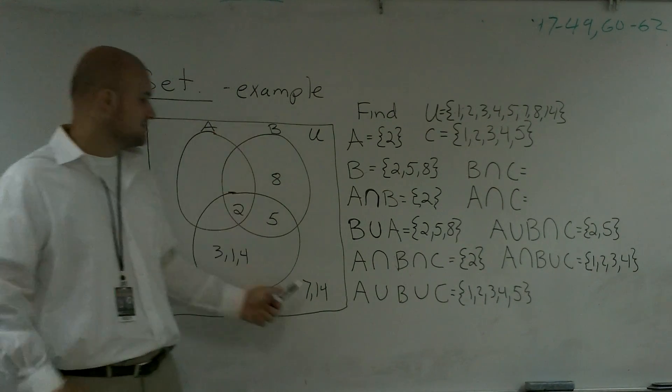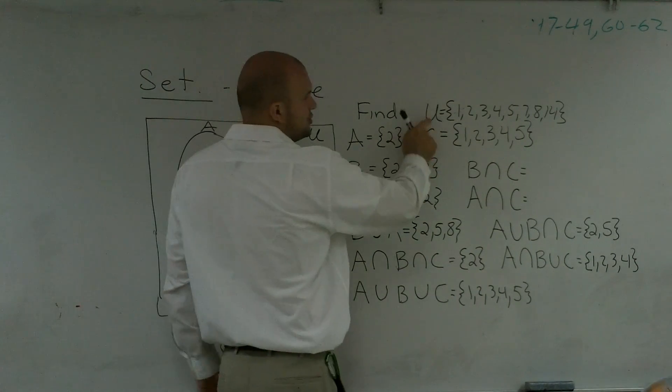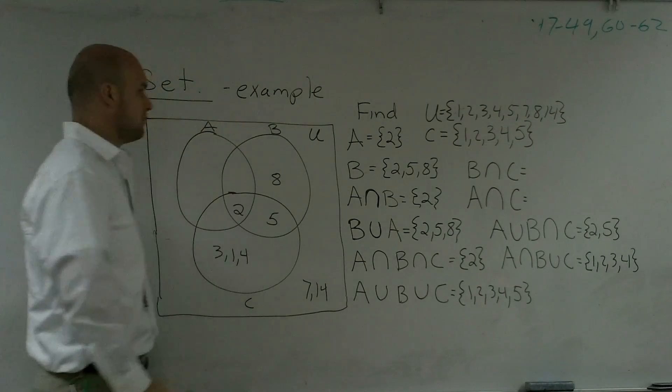And I also added some numbers to our universal set. So now our universal set, as I denote up here, U equals 1, 2, 3, 4, 5, 6, 7, 8, and 14.